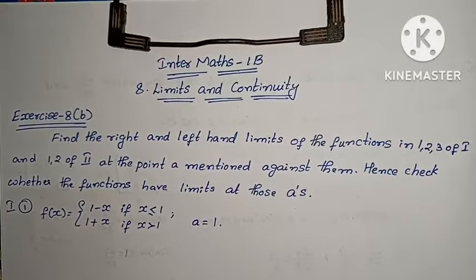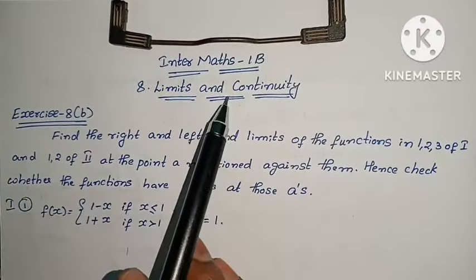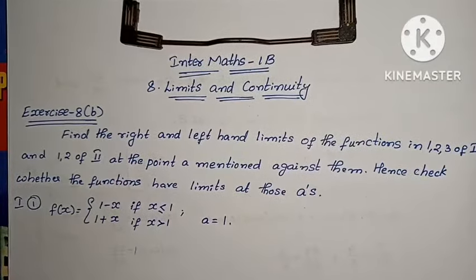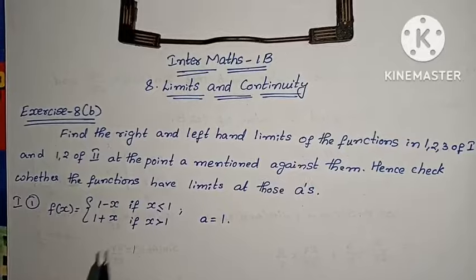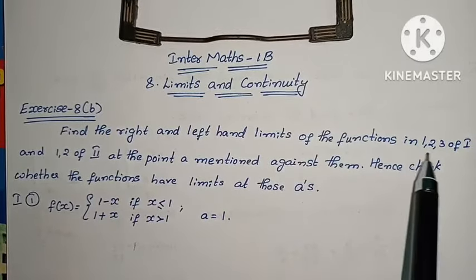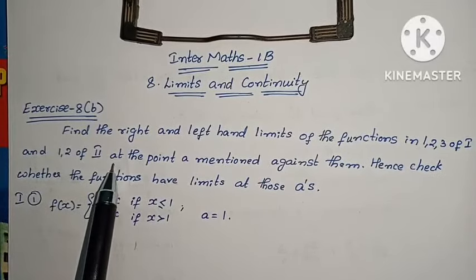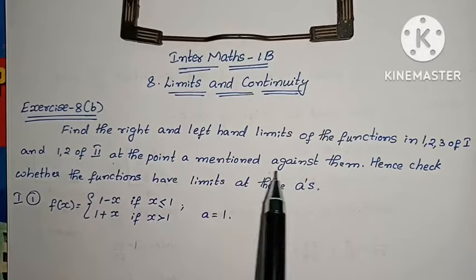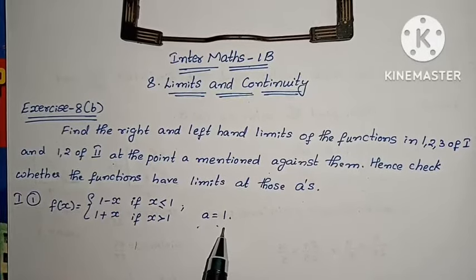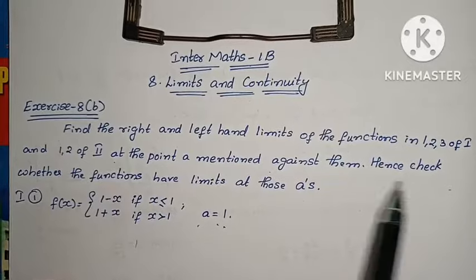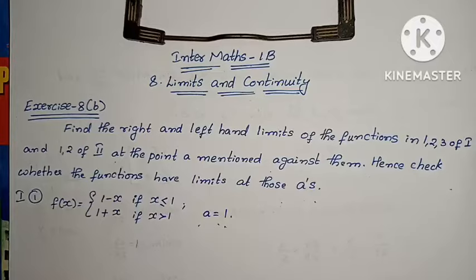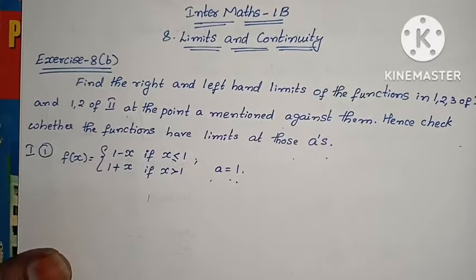Hi, welcome to Parnika Maths. In Maths 1b, Chapter 8, Limits and Continuity. Exercise 8a is complete; in this video we will do Exercise 8b. The question asks: find the right-hand and left-hand limits of the functions at the mentioned points, and check whether the function has a limit at those points — whether the limit exists or not.